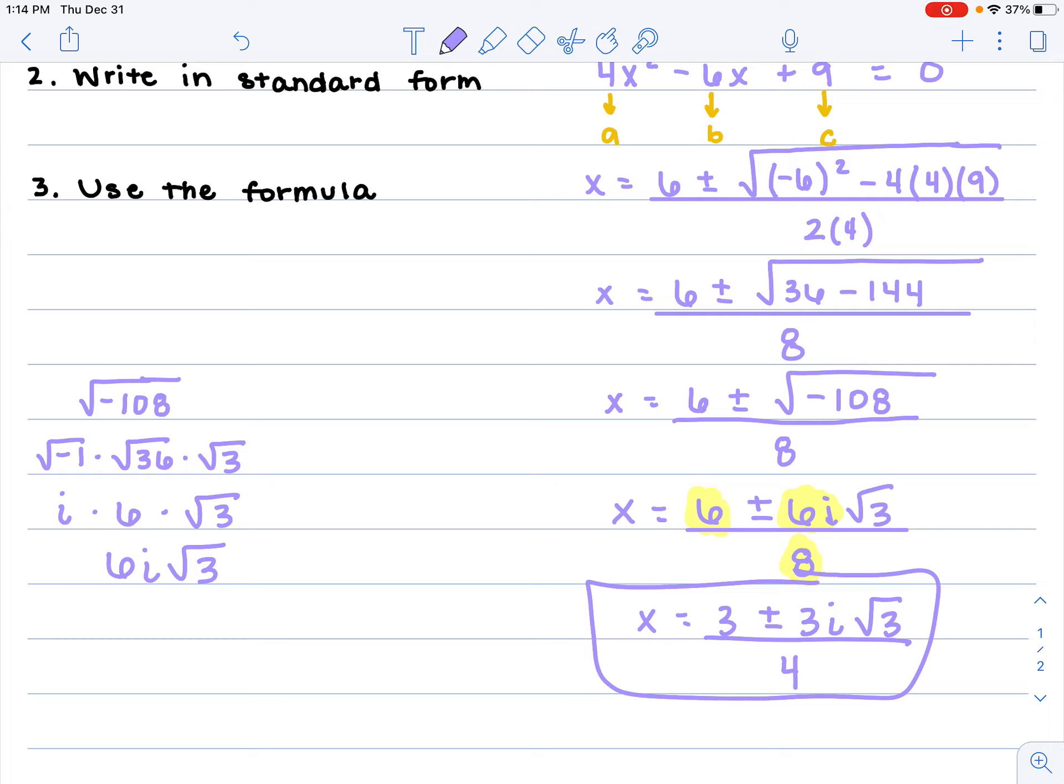So that would be my perfect and final answer, because you do have to reduce those. Because you have to check for GCF. Always look at those numbers on the outside of those constant terms and that imaginary term. And that's how you do the question.